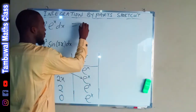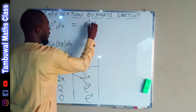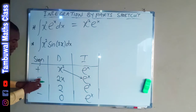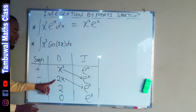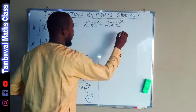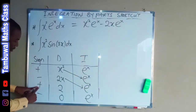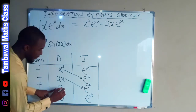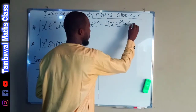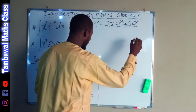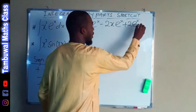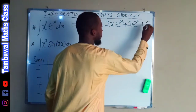The first term is x squared times exponential x. The second term is negative 2x multiplied by exponential x. The third term is positive 2 times exponential x. Lastly, zero times anything is zero, so we stop and add the constant of integration. This is exactly equal to the integral of this function with respect to x.